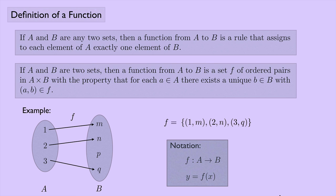We have a bit of notation you should be familiar with. F with a colon from A to B indicates a function mapping things from set A to set B. And y = f(x) is another way of using function notation, where x is the variable. Of course, you could have a function with more than one variable or different types of variables, but this is common enough that you should be familiar with it.